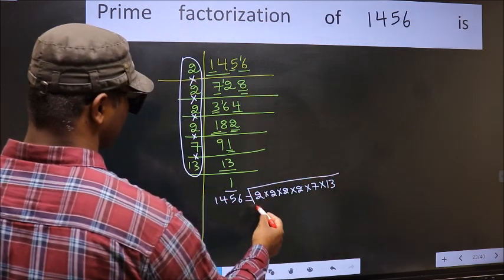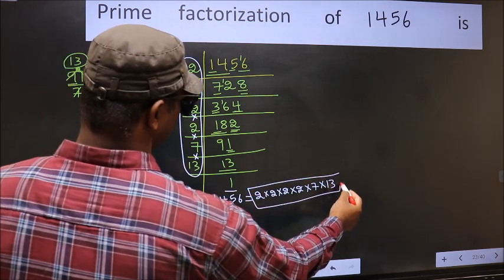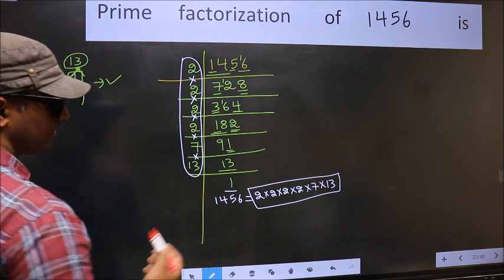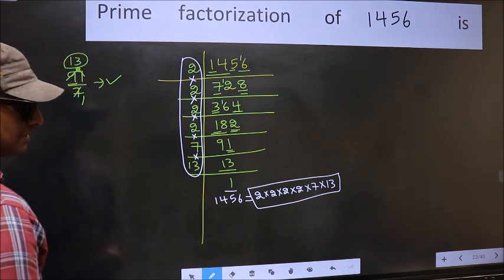This is the prime factorization of 1456.